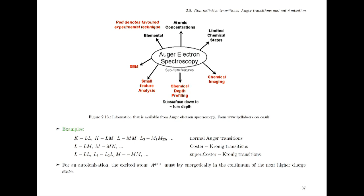We typically distinguish between normal Auger transitions, where you fill from a different shell, and special cases. For instance in argon, the L1L23M transitions — a 2P electron falls to 2S and releases one additional electron — show a strong overlap of the 2P and 2S wave functions because they are localized in the same shell. These special Auger transitions are called Coster-Kronig if one comes from the same shell, or super-Coster-Kronig if both come from the same shell. They are much more likely, and instead of a well-defined Auger peak, you often have a very broad structure which cannot be resolved in the spectra.